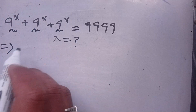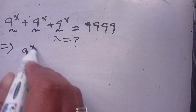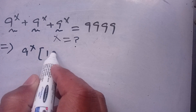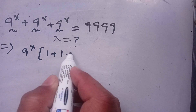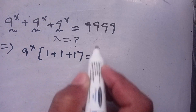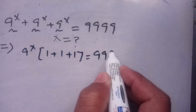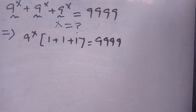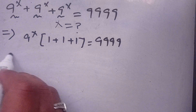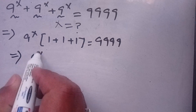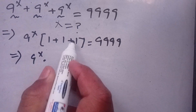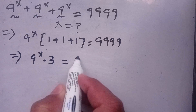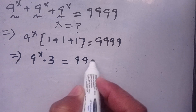We take out 9 power x common, and the remaining terms give 1 plus 1 plus 1. So it becomes 9 power x times 3 is equal to 9999.